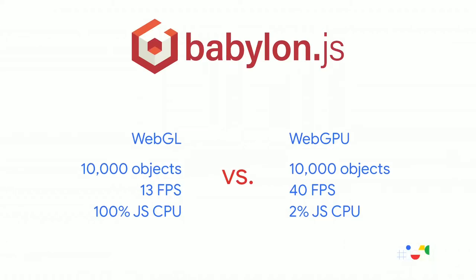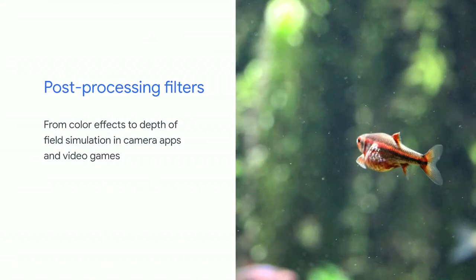But WebGPU is not just about drawing more complex things with more objects. A common operation done on GPUs is post-processing image filters — for example, depth-of-field simulation. We see this all the time in cinema and photography: the fish is in focus while the background is blurred, giving the feeling it's lost in a giant environment. This type of effect is important for cinematic rendering but also used in camera applications, along with other filters like color grading and image sharpening — all of them can be accelerated using the GPU.